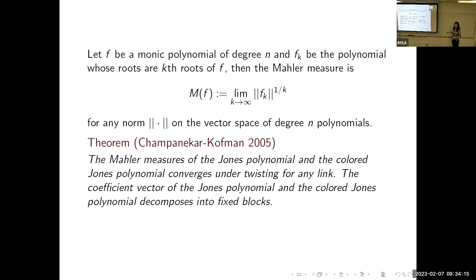Abhijit and Ilya showed that the Mahler measure of the Jones polynomial and the colored Jones polynomial converges under twisting for any link. What do we mean by twisting? You have a knot diagram, you look at the intersection of a disk with any set of parallel strands—in this example it's two, but you can also look at n parallel strands—and you pick them up and twist, replacing what's inside the tangle. You should be putting a full twist to get a new diagram.